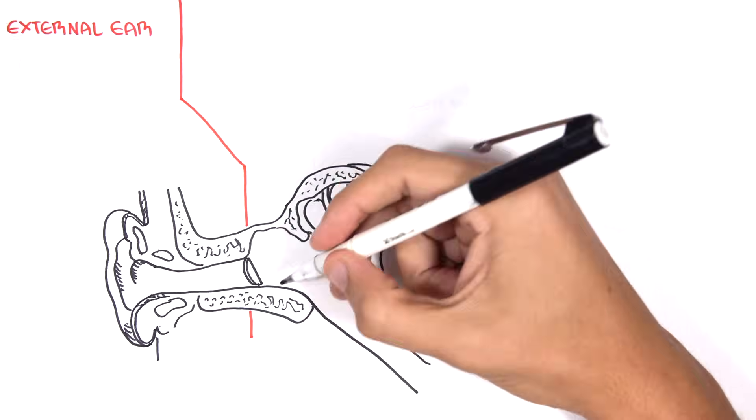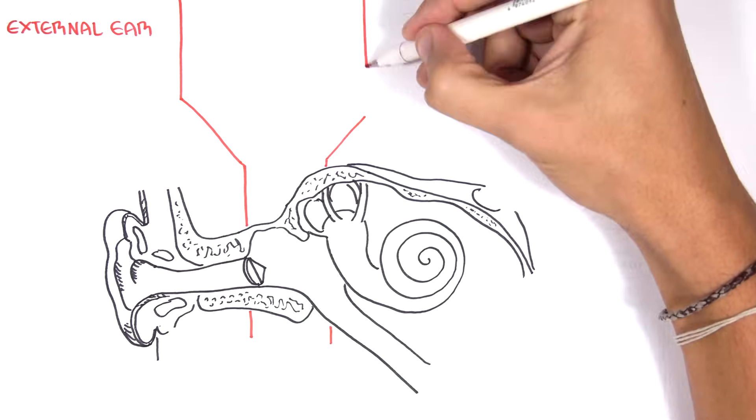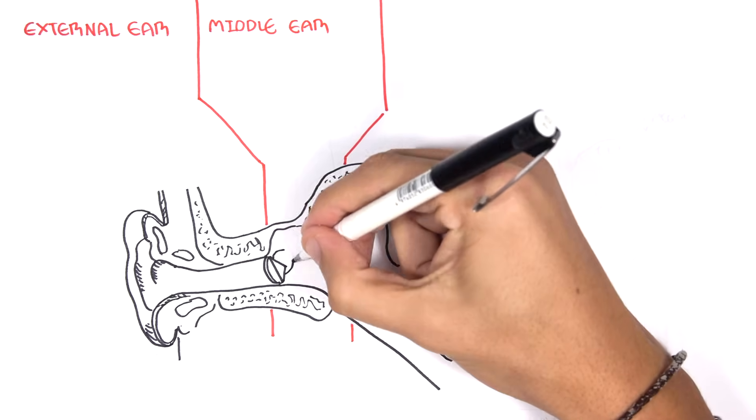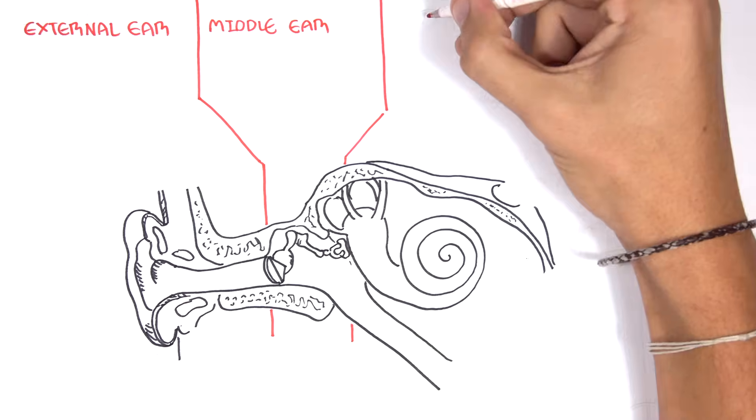Here the middle ear from the eardrum to the oval window. And the inner ear which is basically your cochlea and your hair cells. This shell looking structure.